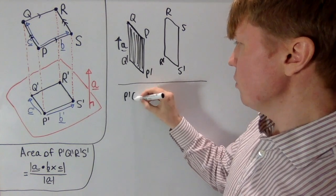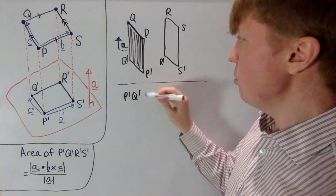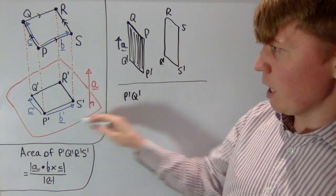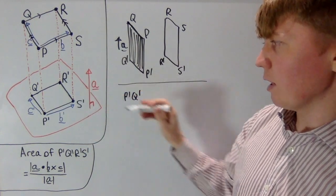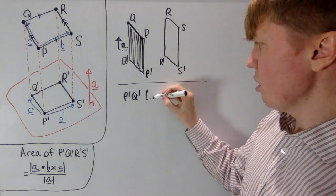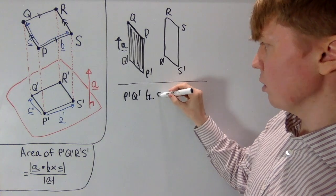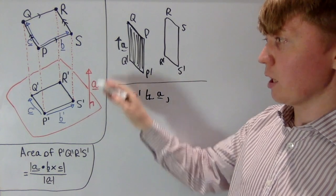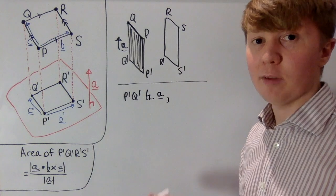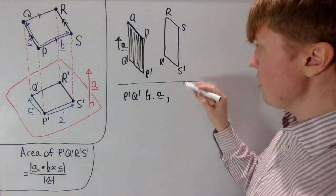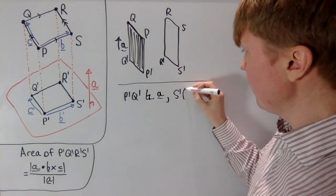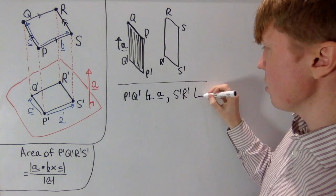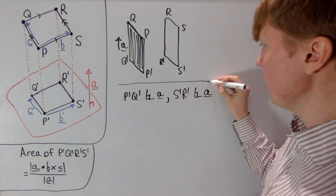First of all, p prime q prime lies in the red plane, so it's going to be orthogonal to the a vector, since a is the normal vector to that plane. Similarly, s prime r prime also lies in this plane, so it's also orthogonal to our a vector.